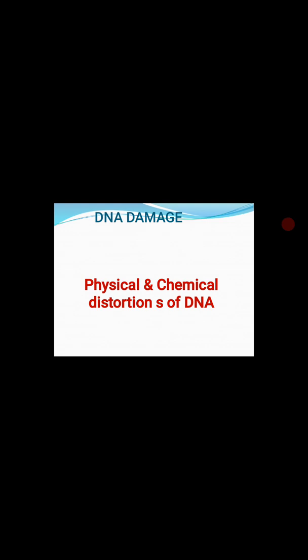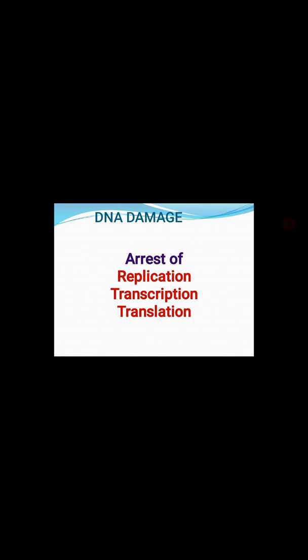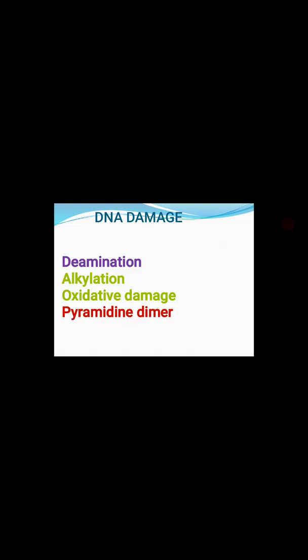Just a quick recap of what we have seen in the last few classes: DNA damage is the physical and chemical distortions of DNA, and because of DNA damage there will be complete arrest of the central dogma — that is replication, transcription, and translation. We discussed the classification based on the mechanism of damage: deamination (removal of amino group), alkylation (addition of alkyl group), and oxidative damage due to reactive oxygen species.